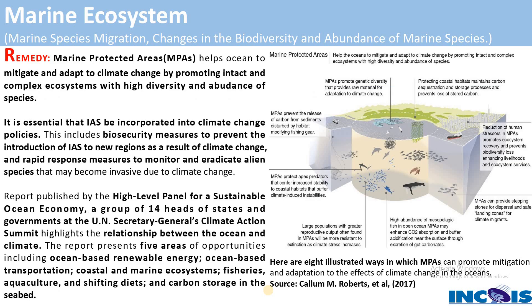Invasive species remain one of the biggest causes of biodiversity loss, species extinction, and a global threat to food security and livelihoods. In terms of mitigation strategies: one important approach is Marine Protected Areas (MPAs). This image shows eight illustrated ways in which MPAs can promote mitigation and adaptation to the effects of climate change in the oceans — by promoting intact and complex ecosystems with high diversity and abundance of species.